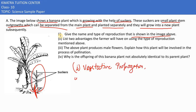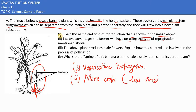The second part asks to list two advantages for farmers using this type of reproduction. The benefits are: first, you can produce more crops in less time because the new plant is coming from an existing part. Second, the plants would be genetically identical to each other.